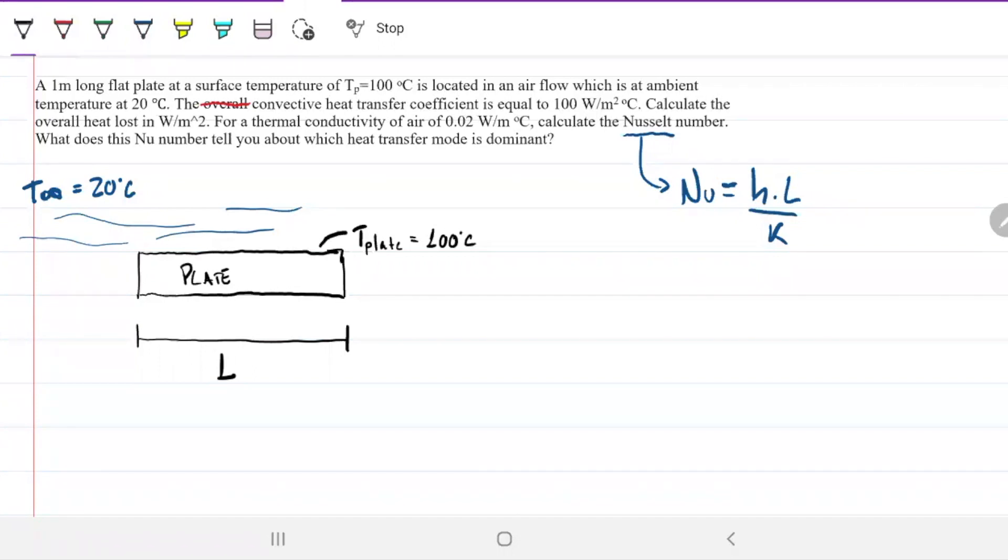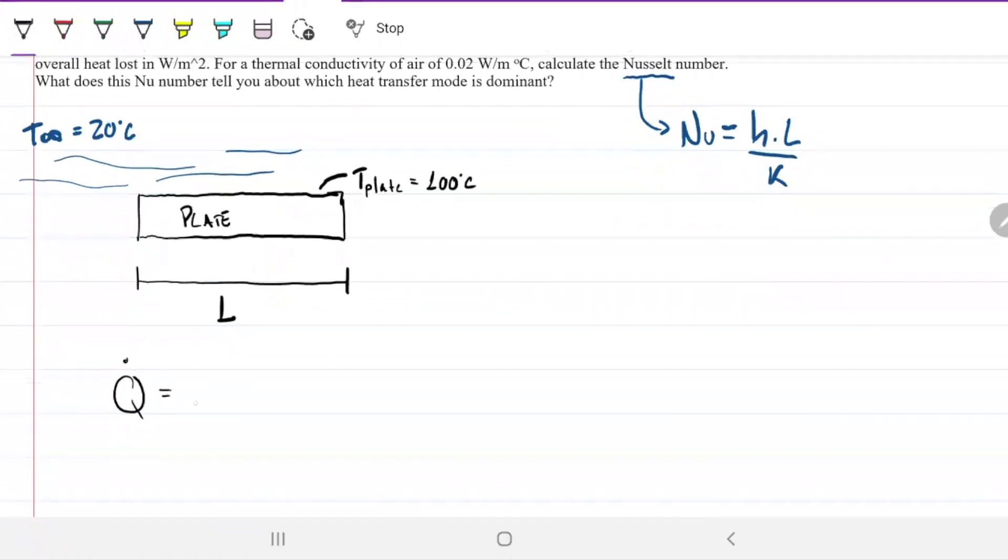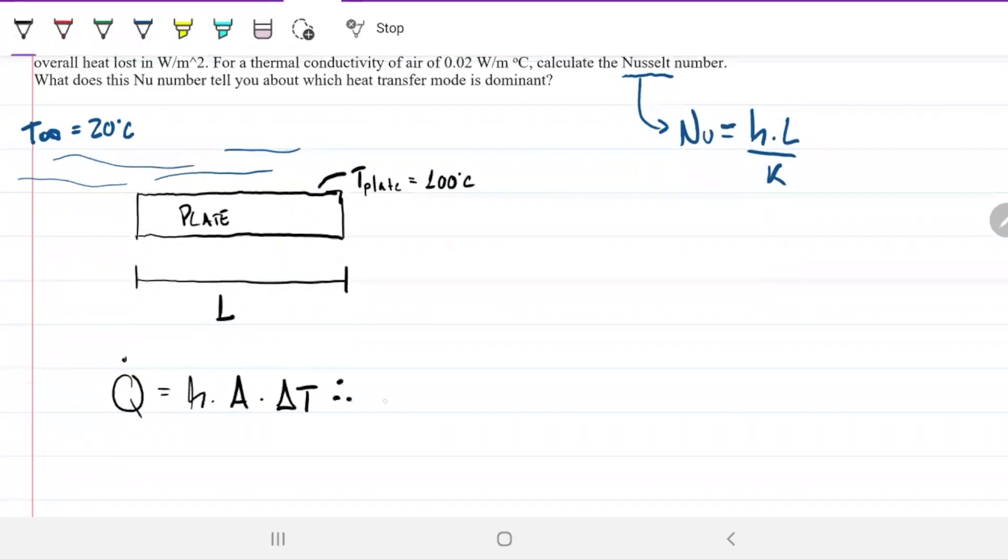Okay, so let's start with what is the heat flux here. Newton's law of cooling says Q equals h A delta T. If we're after the heat flux, then we send the area divided over here, and that means it's just going to be h times delta T. And that is so convenient, isn't it?